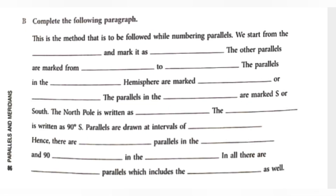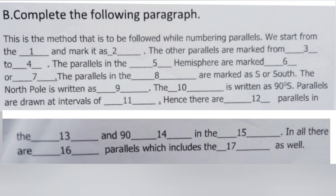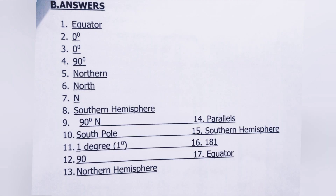Part B: complete the following paragraph. There are some fill-up blanks we need to fill in. We will number them 1 through 8 and fill them in order. Number 1: equator. Number 2: zero degree. Number 3: zero degree. Number 4: 90 degrees, and so on. That completes Worksheet 2.